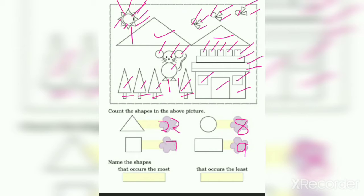Name the shapes that occurs the most. Among all these shapes, the shape that occurs the most is triangles. Among all these shapes, the shapes that occurs the least is squares.